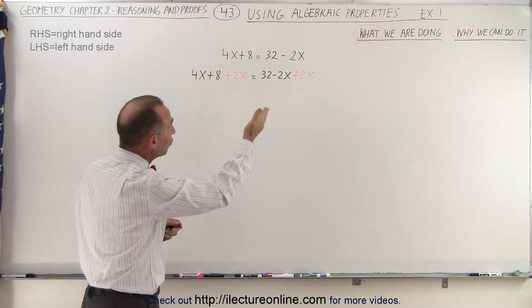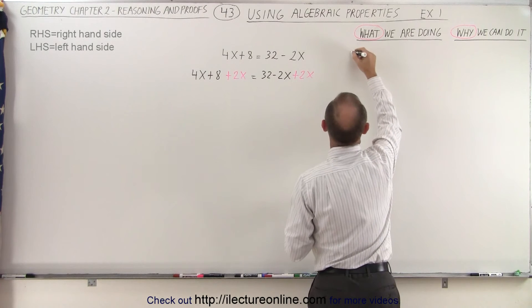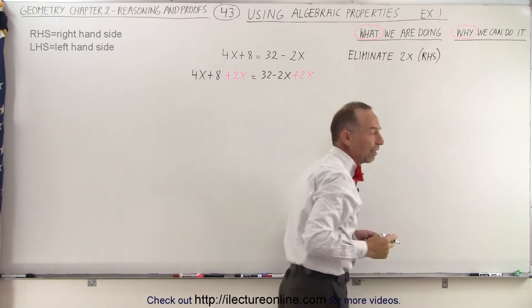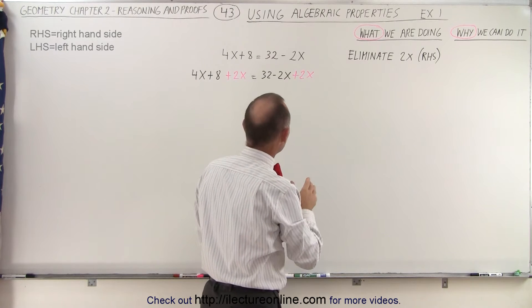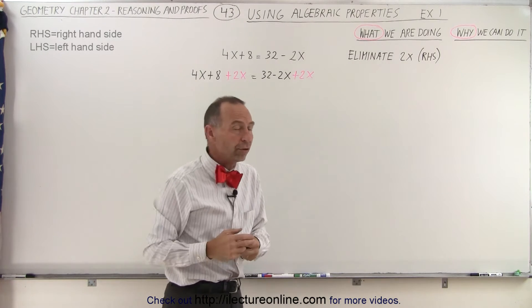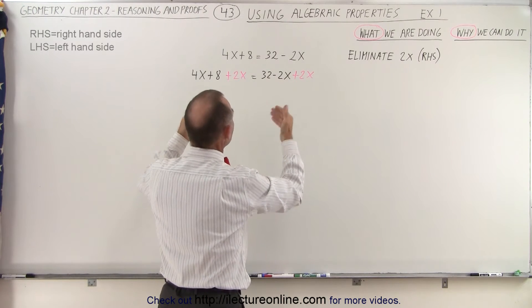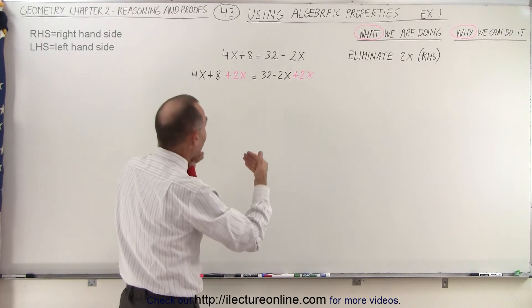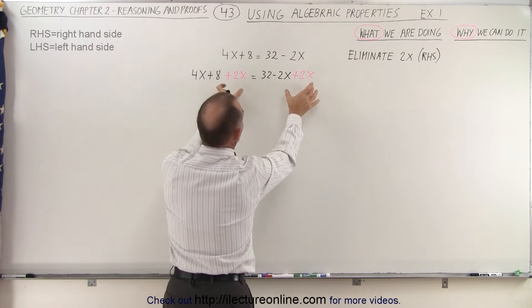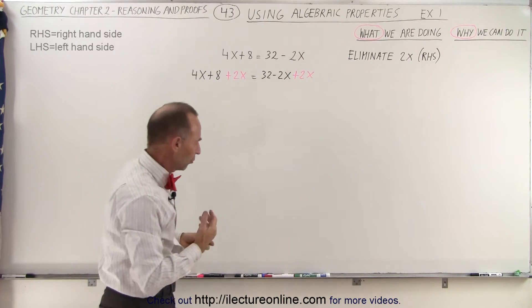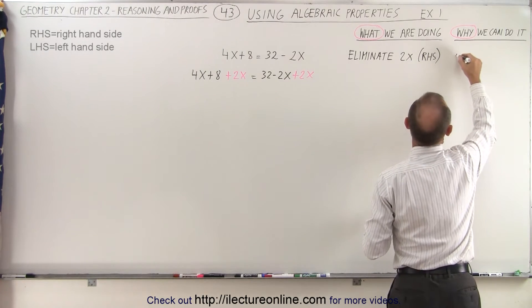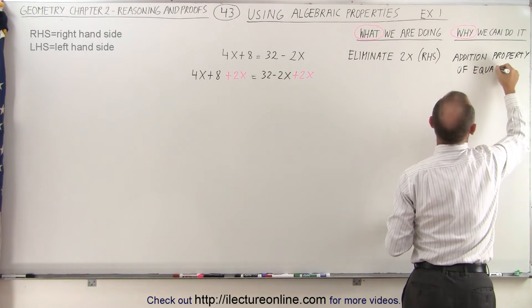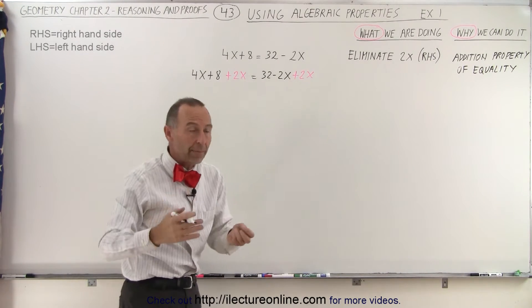I'm eliminating the minus 2x on the right-hand side — RHS stands for right-hand side. And why can I do that? What allows me to make that decision is the addition property of equality. The addition property of equality says that if the left side equals the right side, I can add exactly the same thing to both sides and nothing should change. So this is what we call the addition property of equality.